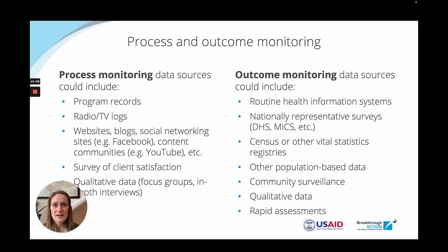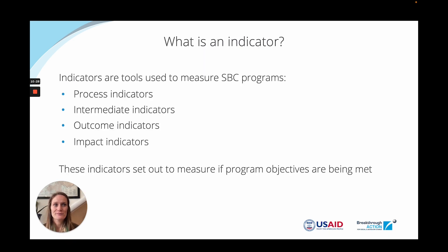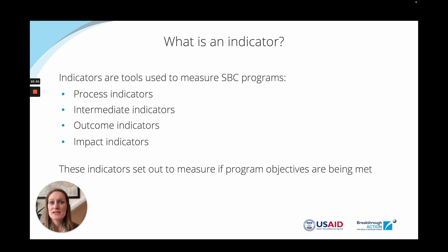These data sources help us get information on specific indicators. Simply put, indicators are tools that help us measure how an SBC program is doing at whatever stage you're thinking of. They give you specific, measurable information to help us understand if program objectives are being met or not, and they often have specific definitions. Program indicators should be guided by your program objectives as well as your implementation strategy, and are essential to helping your monitoring and evaluation team organize their activities. We often break down indicators into process, intermediate, outcome, and impact indicators.